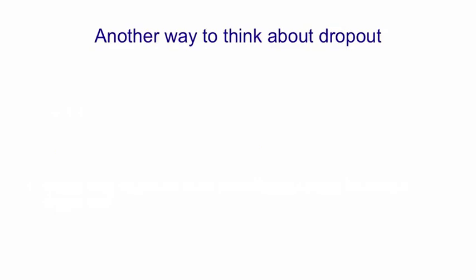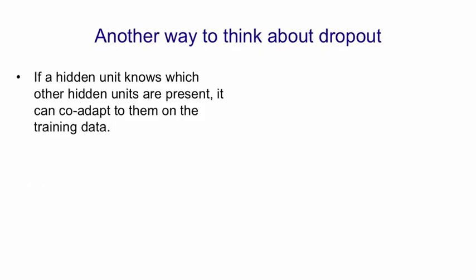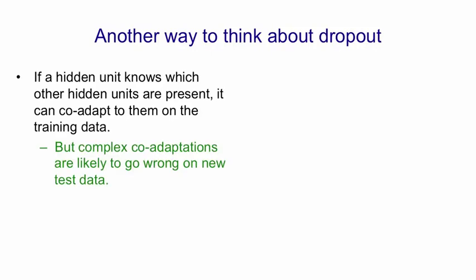There's another way to think about dropout, which is how I originally arrived at the idea. If a hidden unit knows which other hidden units are present, it can co-adapt to them on the training data. What that means is the real signal that's training a hidden unit is try to fix up the error that's left over when all the other hidden units have had their say. That's what's being backpropagated to train the weights of each hidden unit.